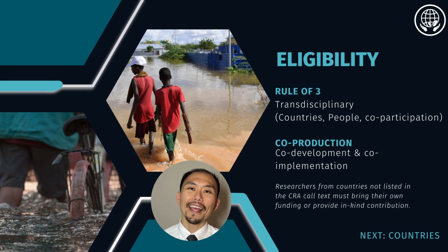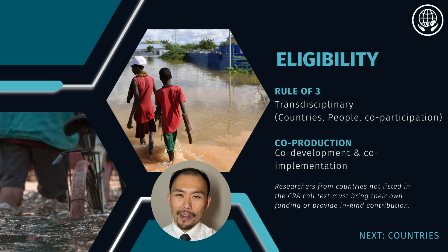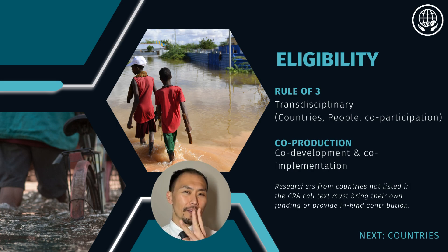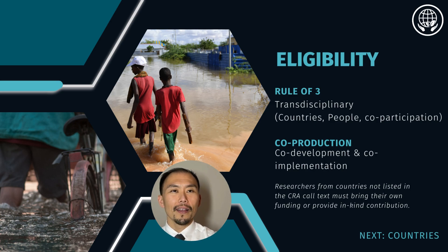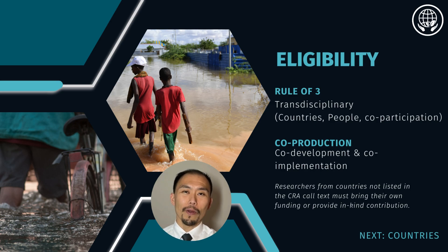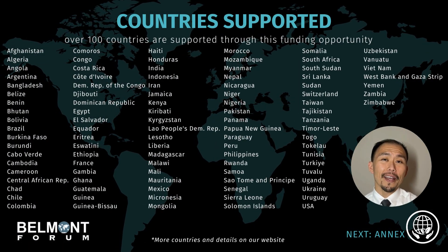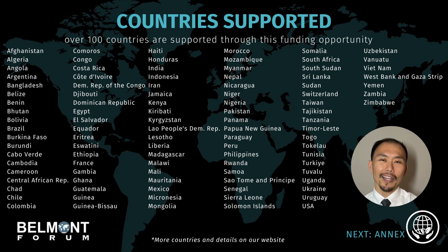The next question you're probably thinking is: am I eligible? To simplify the process, think of the rule of three. The projects must have three different people from three different countries with three different specialties — natural scientists, social scientists, or a stakeholder in civil society or government/ministry. The full list of criteria can be found on our website and on the CRA itself. Feel free to pause the video here, as this is a large list of countries — if you are from these countries, you are likely eligible for this collaborative research action on climate, environment, and health.